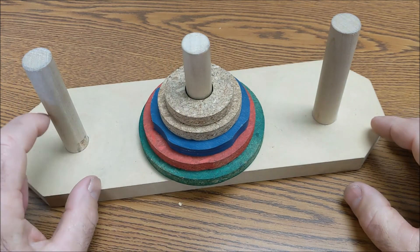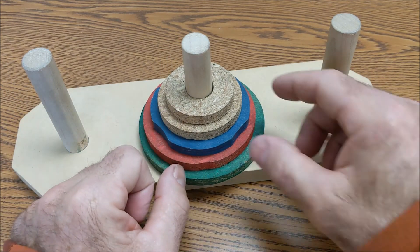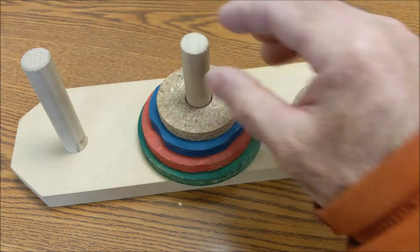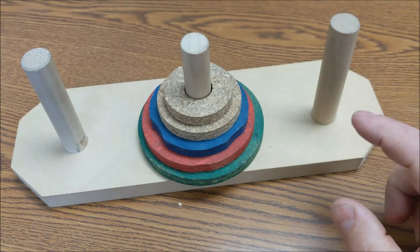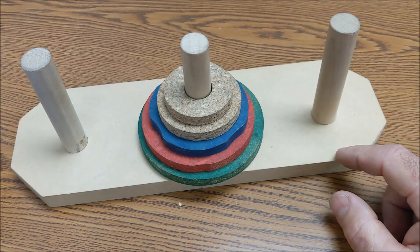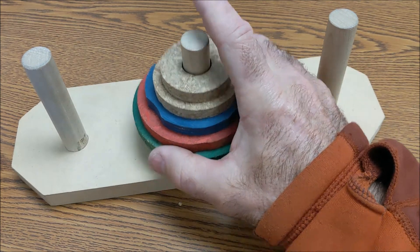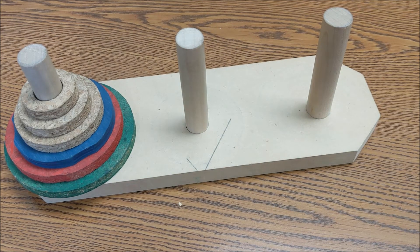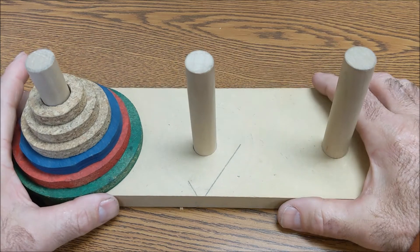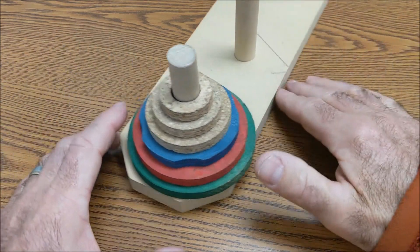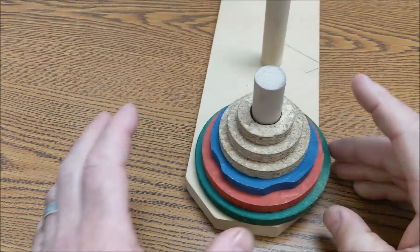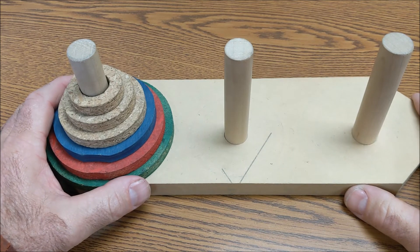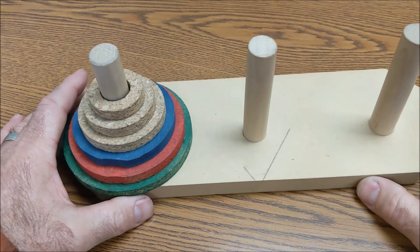So again, the goal is to move all those disks from one peg to the next. The two rules are never put a larger one on top of a smaller one, so you can't do that, and only one disk at a time. And the number of ways you could do it is 2 to the n minus 1, so I have 5 disks, the minimum number of time would be 31. Then you could go to 6 disks or 7 disks or 8 disks. It's a great woodworking project. It's a fun puzzle to have out. I usually just use scraps in the woodshop, and then we also do it in math, and we figure out the algorithm. So it's a really fun woodshop program and also a really fun math puzzle.